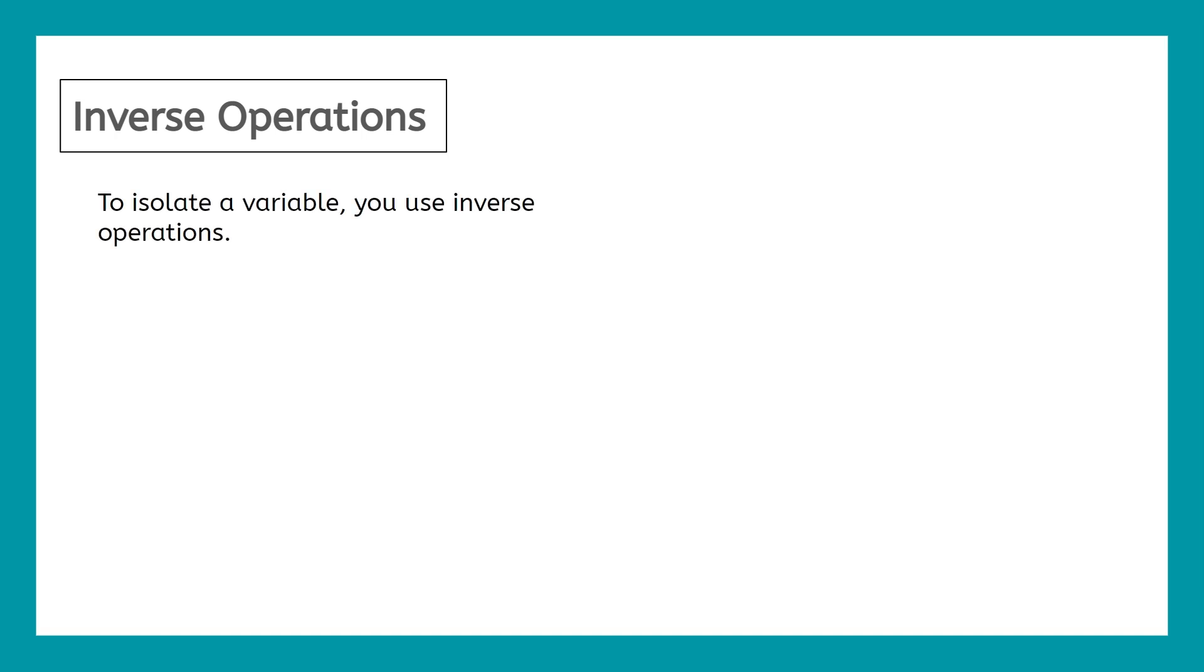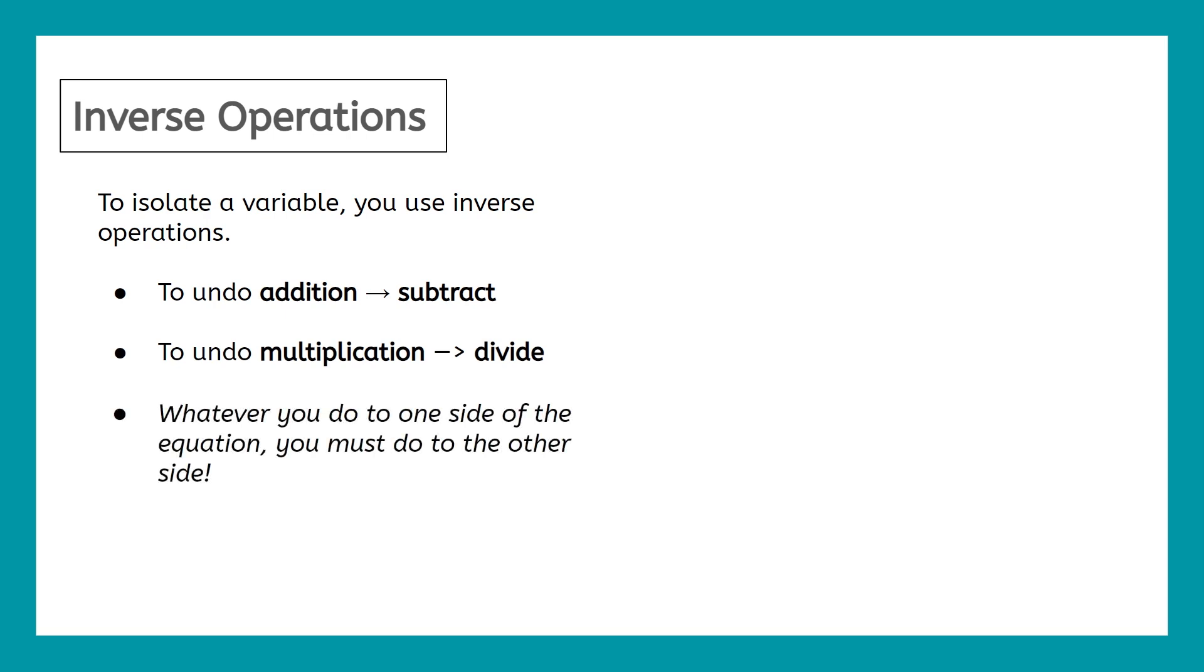To isolate a variable, you use inverse operations. That means to undo addition, you're going to do subtraction. So we do the opposite of what's being done to a variable in the problem. To undo multiplication, you'll do division. Whatever you do to one side of the equation, you must do to the other side. That's just the golden rule of algebra. So whenever you do one thing to one side of the equation, you have to do that exact same thing to the other side.